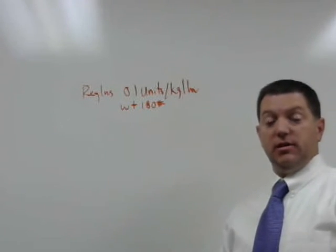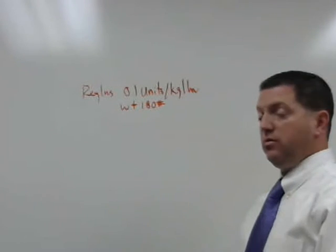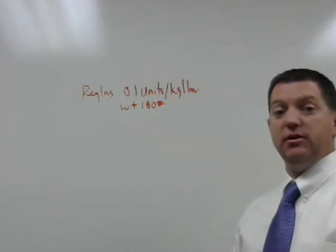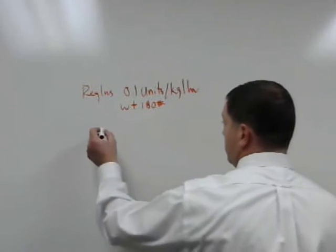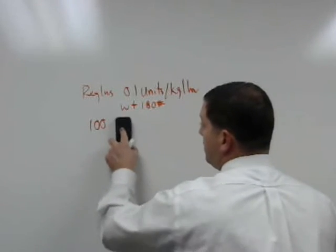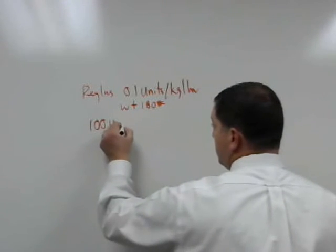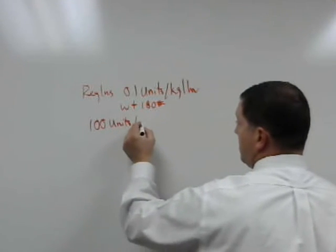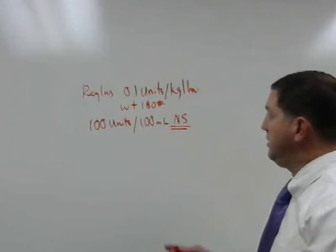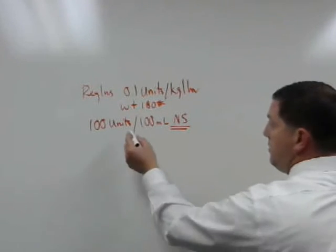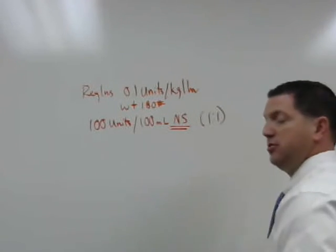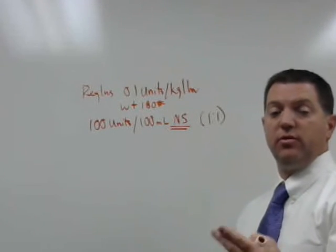Also what we need is the insulin in the piggyback. So we're going to say for this example that we have 100 units of regular insulin mixed into 100 ml of normal saline. With this 100 units per 100 ml, we are going to have a concentration of 1 unit per 1 ml.